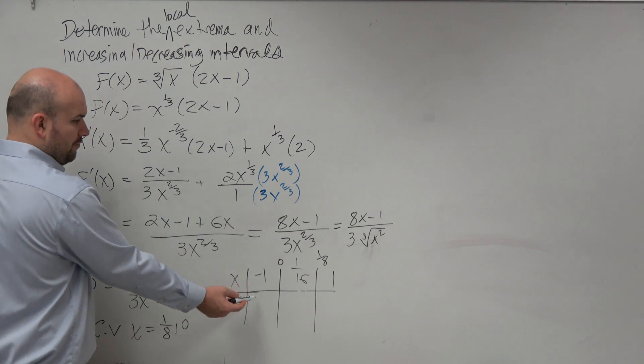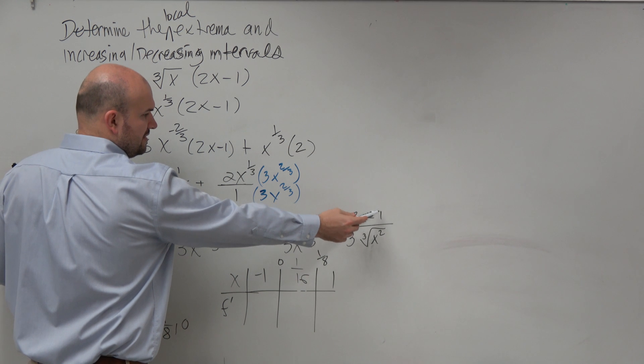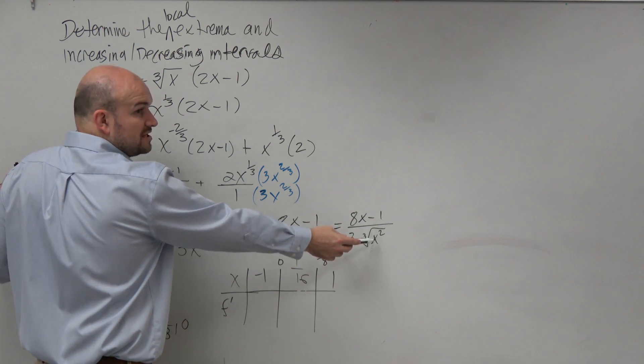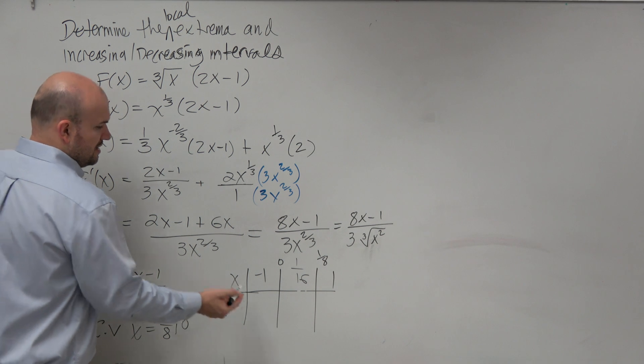So we plug in -1, that turns to negative. -1 is negative over a positive, right? Because this is always going to be positive. So you have a negative over a positive, which is negative.